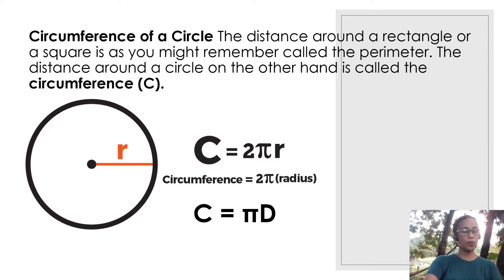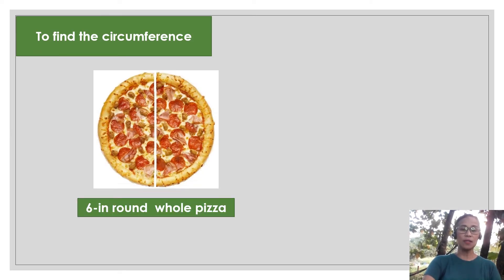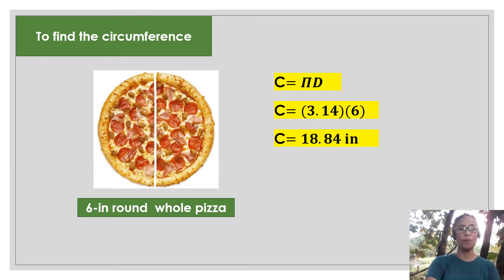We are now going to use this formula so that we can accurately solve for the circumference of the whole pizza. So our given is it is 6 inch round pizza. 6 inch represents the diameter. So use the formula C equals pi times d. The constant that we use for pi is 3.14. By substitution, C equals 3.14 times 6. The answer is 18.84 inches. So that is now the circumference of the round pizza.